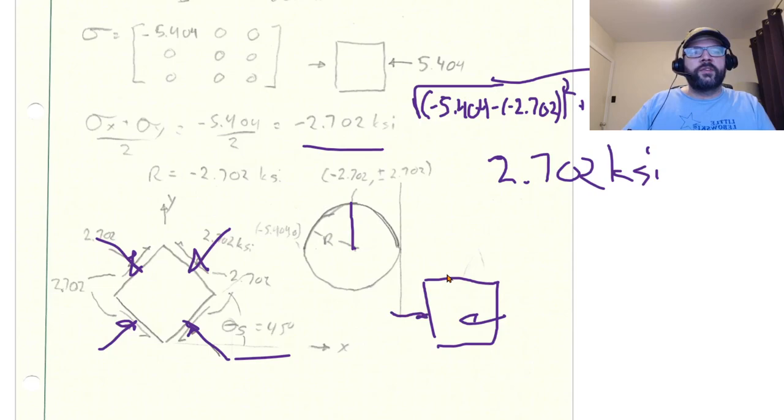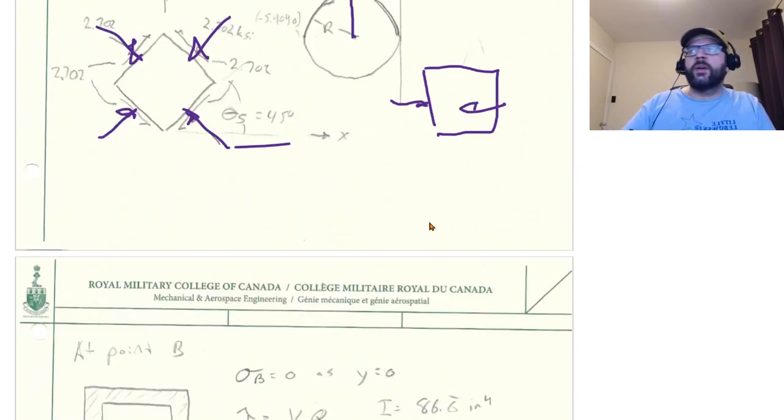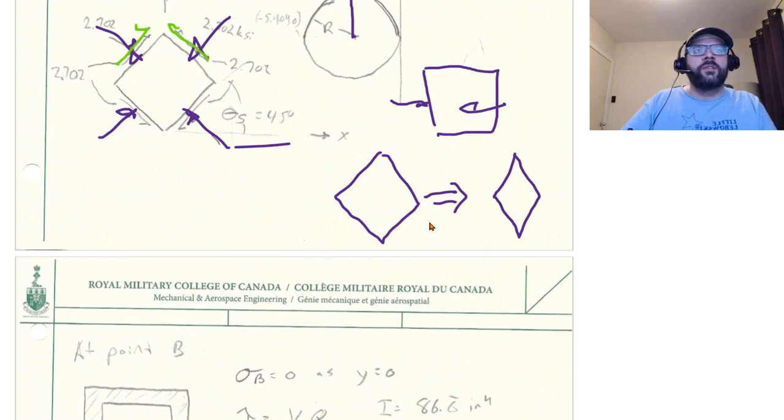And if we're squeezing a cube that way, if we started out with a cube like this that's going to result in a cube that looks more like this, which is going to need shear stresses that act like that in order to deform it that way. That's how you can tell your directionality there.